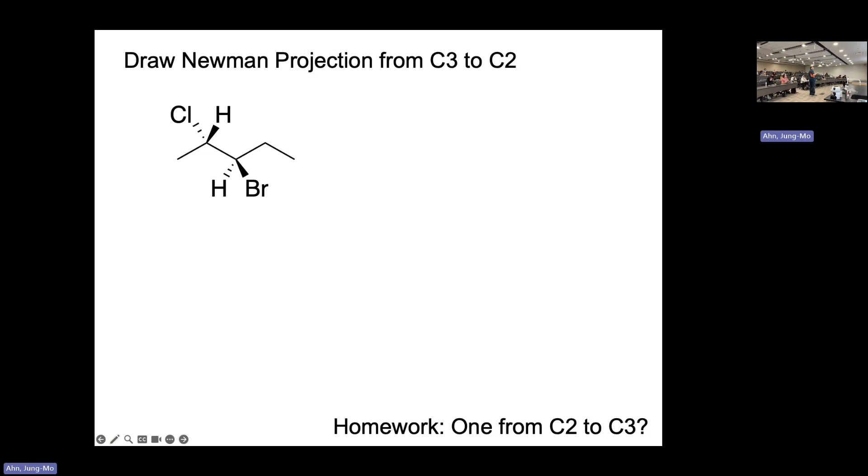Draw the Newman projection of this molecule from C3 to C2. The numbers refer to the carbon numbers of the chain.